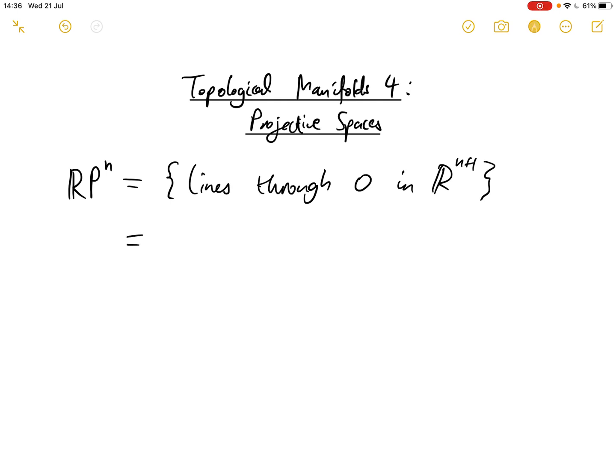So we can realize this as a quotient space of Rn plus 1 without the origin, where we glue together any two points that are on the same line through the origin. So we can say x is glued to lambda x for all lambda in the real numbers except 0.